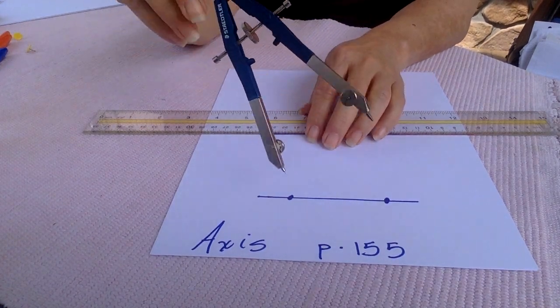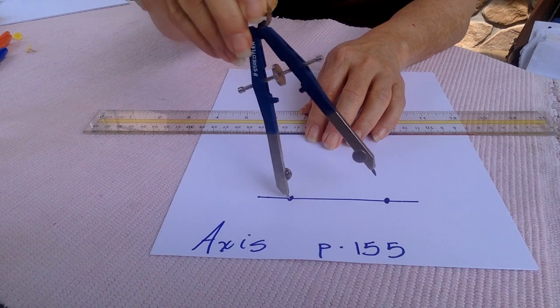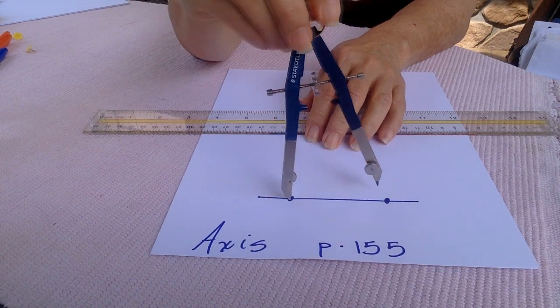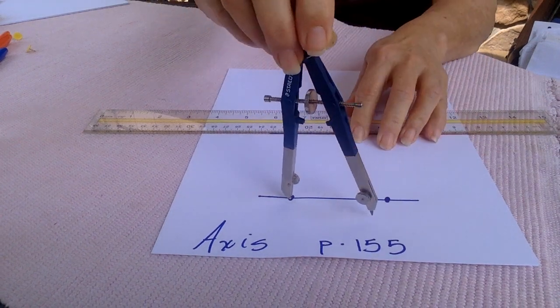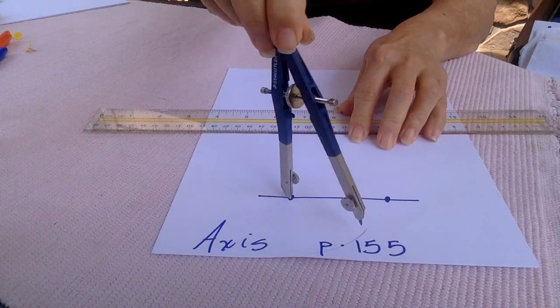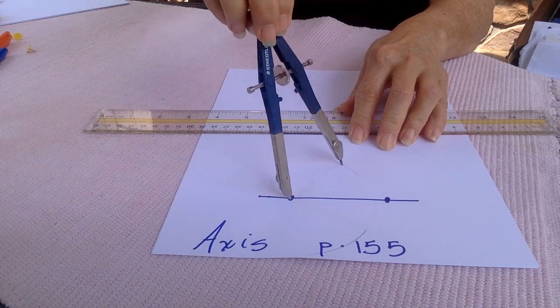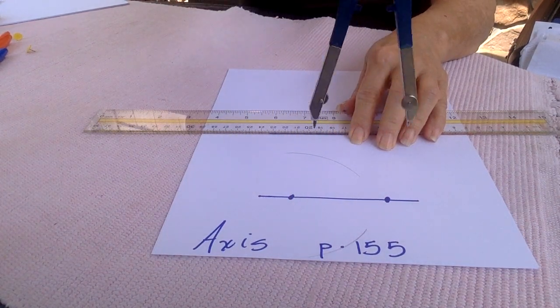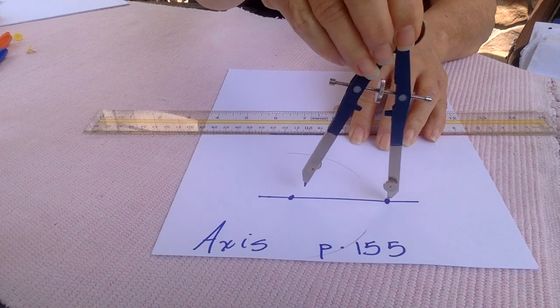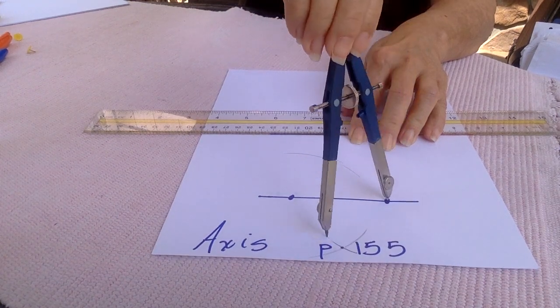I'm going to take my compass again, maybe about three-quarters of the way, and I'm going to go an arc above, arc below from one endpoint.